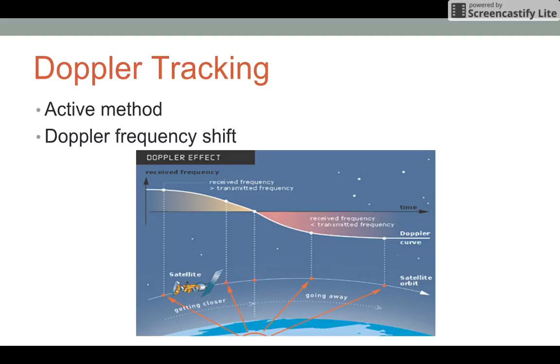This Doppler curve or Doppler frequency shift ranges from hundreds to thousands of Hertz off of the true transmitted frequency. When the ground station is known, this can be used to calculate the orbital information.